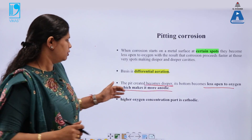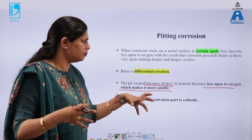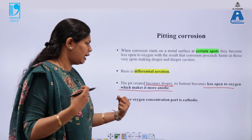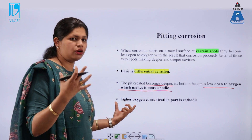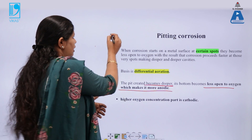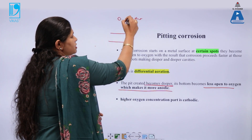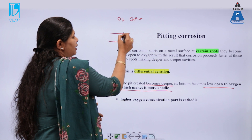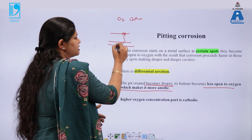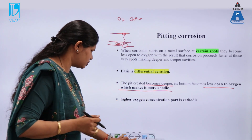In pitting corrosion, when the pit becomes deeper, its bottom becomes less open to oxygen, which makes it more anodic, while the higher oxygen concentration part above is cathodic. Inside the pit, where you have steel, it is the low oxygen concentration region.